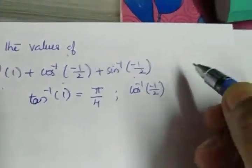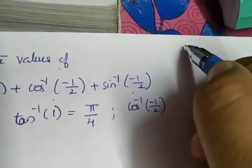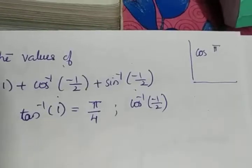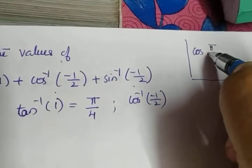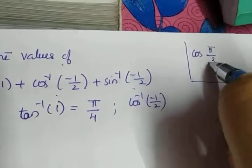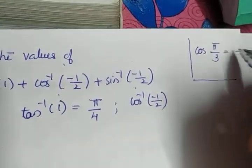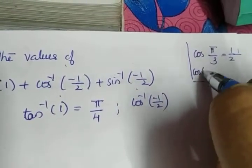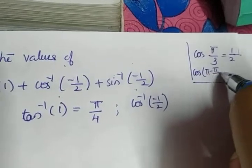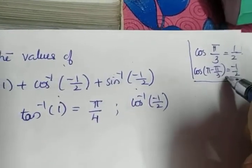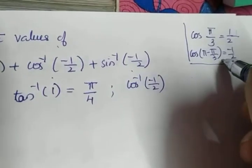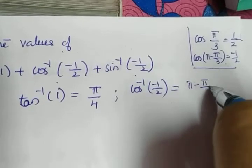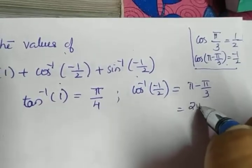Now, cos inverse of minus 1 by 2 — which angle value of cos gives you 1 by 2? Cos of 60 degrees, that is pi by 3, gives you 1 by 2. Since we need the negative, cos of pi minus pi by 3 gives minus 1 by 2. Pi minus pi by 3 is 2 pi by 3, so cos inverse of minus 1 by 2 equals 2 pi by 3.